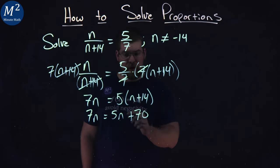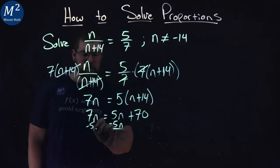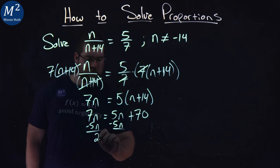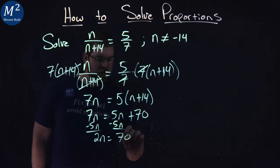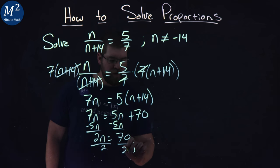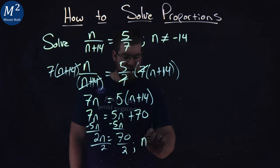From there, let's get n by itself. Subtract 5n from both sides, and hopefully you know how to do this. We have 2n equals 70. Divide both sides by 2, and n equals 70 over 2, which is 35.